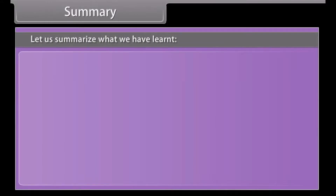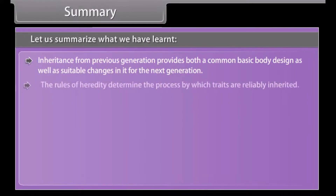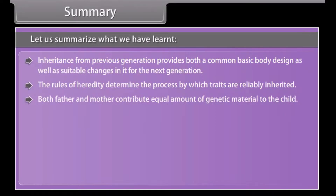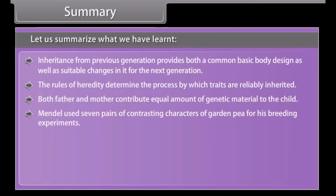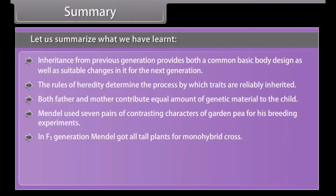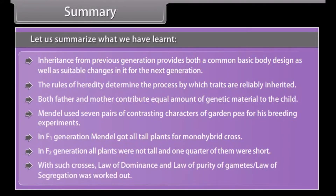Summary: Inheritance from previous generations provides both a common basic body design as well as suitable changes in it for the next generation. The rules of heredity determine the process by which traits are reliably inherited. Both father and mother contribute equal amounts of genetic material to the child. Mendel used seven pairs of contrasting characters of garden peas for his breeding experiments. In the F1 generation, Mendel got all tall plants for the monohybrid cross. In the F2 generation, all plants were not tall and one quarter were short. With such crosses, the law of dominance and the law of purity of gametes — also called the law of segregation — were worked out.